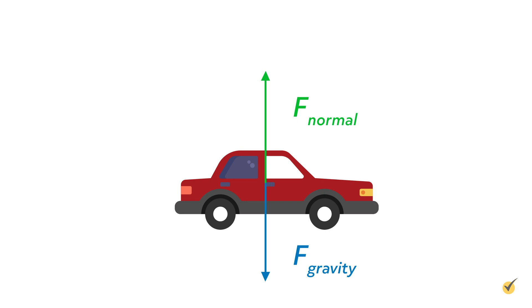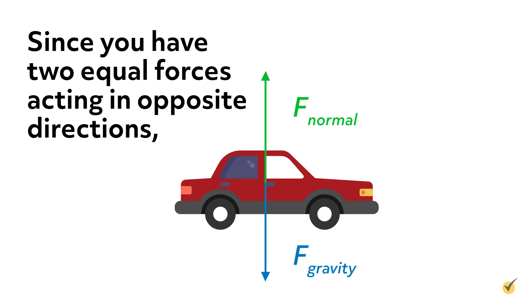While it's true that gravity is pulling the car downward toward Earth, the car is on the ground, and the ground is providing a force in opposition to gravity. This force is called the normal force. Since you have two equal forces acting in opposite directions, the forces cancel out, meaning that the car does not move in the vertical direction.